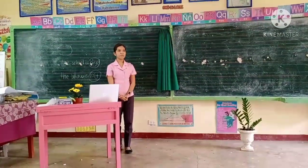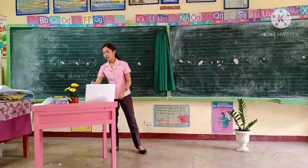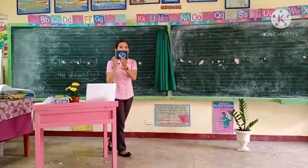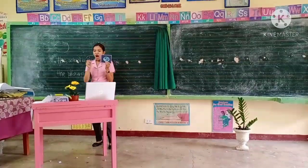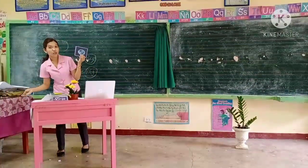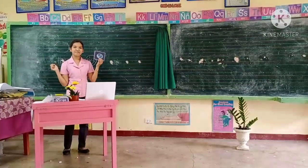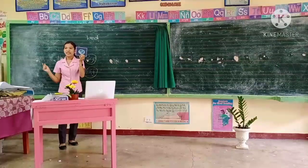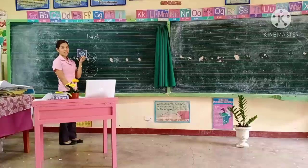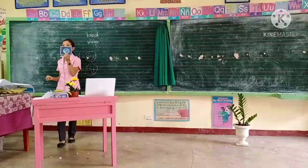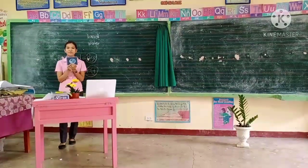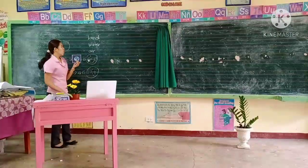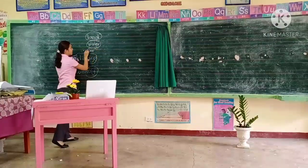Before we proceed to our new lesson, I will show you a picture. What have you seen in the picture? An earth. And what part of the earth is shown in the picture? We have the land, the water, and the air.